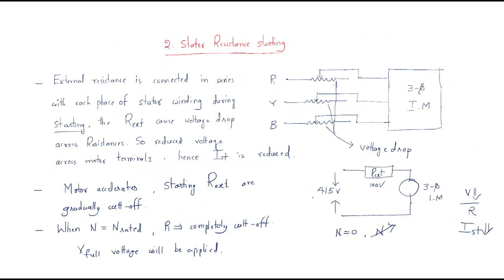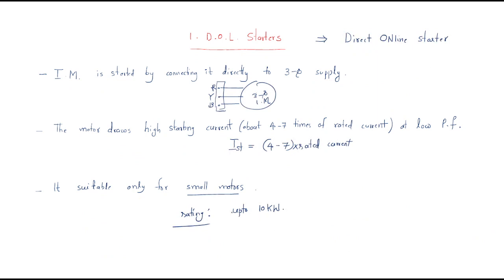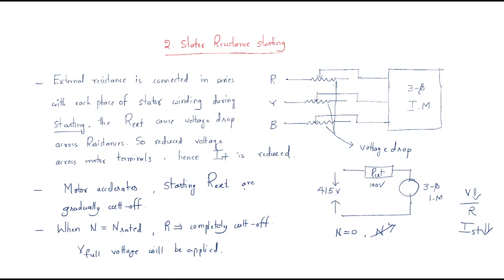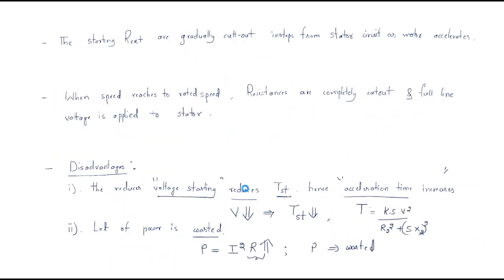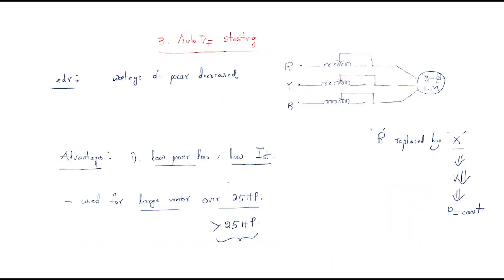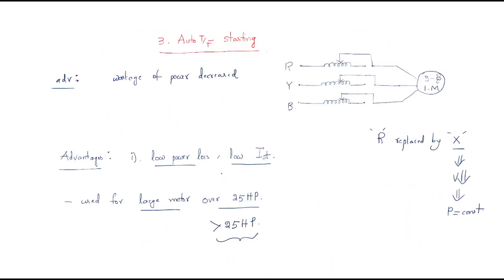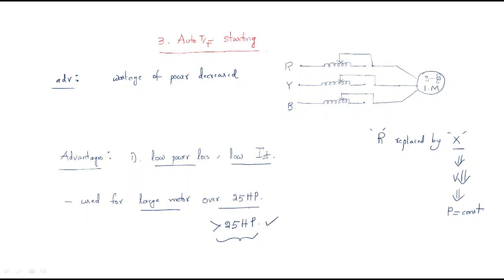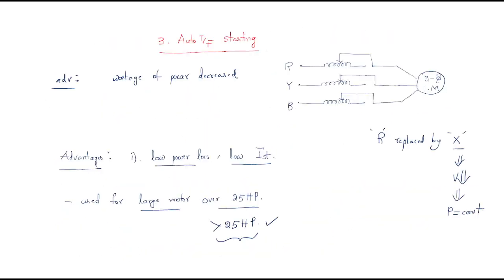To summarize: we discussed three methods — DOL starter, where supply is given directly and is suitable for small motors; stator resistance starting, where resistances control the starting current; and auto transformer or inductance starting, where resistance is replaced by inductance to reduce power wastage, used for motors above 25 HP. I hope all of you understood the session. Thank you.